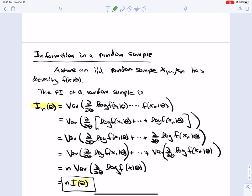So I'm going to assume that I have IID random sample, X1 to XN, from the same density. Then the Fisher information of the random sample, which I'm going to write as I sub N of theta, is the variance of the derivative with respect to theta of the log likelihood. The joint density factors because of the independence.